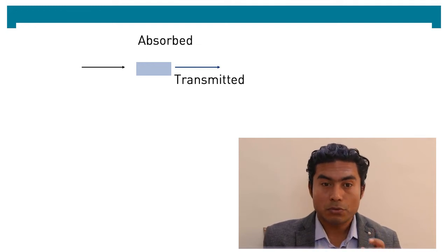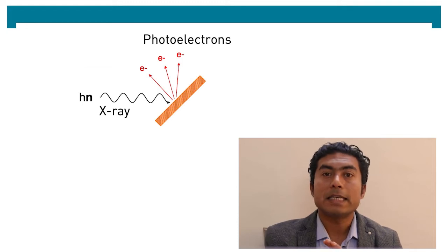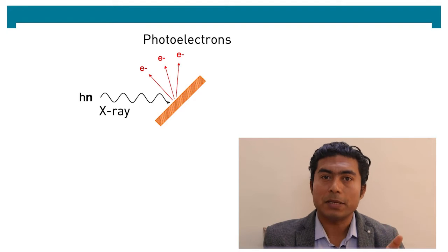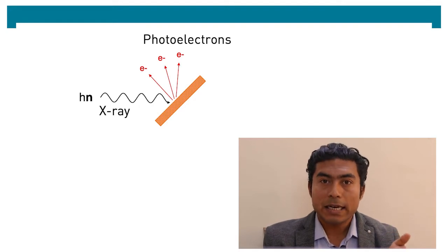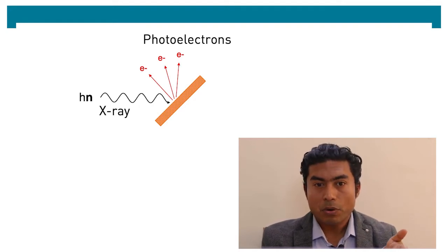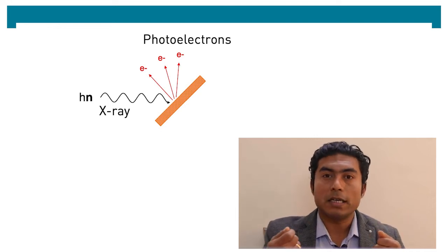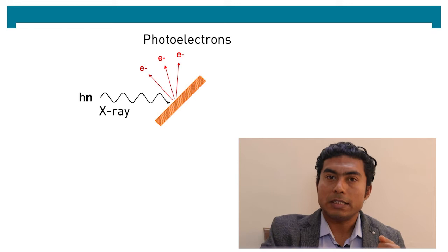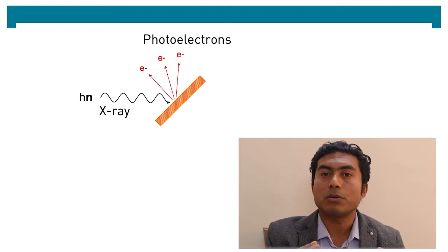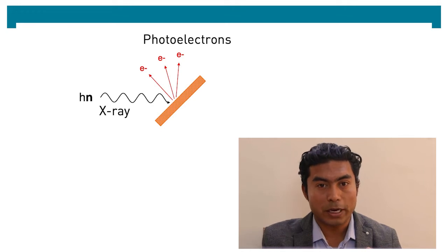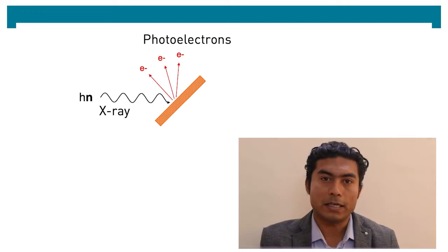But photoelectron spectroscopy is entirely different. Here we shine a material with x-ray light or x-ray photons and from the material electrons are ejected. These electrons are called photoelectrons. We analyze the photoelectrons and obtain various informations.